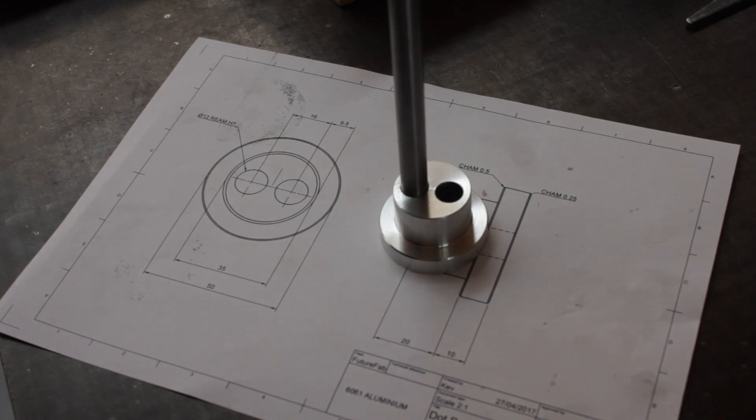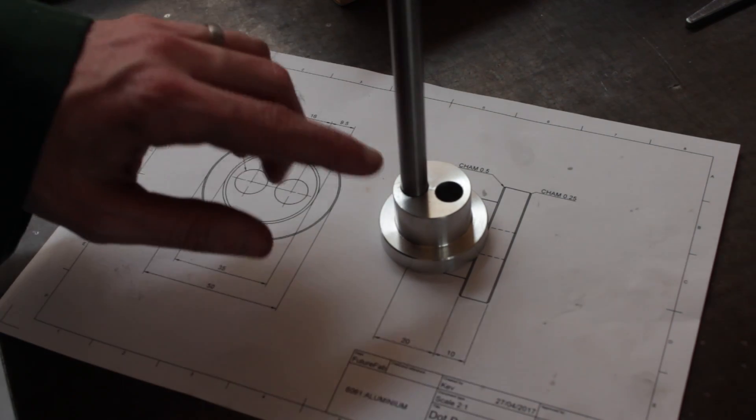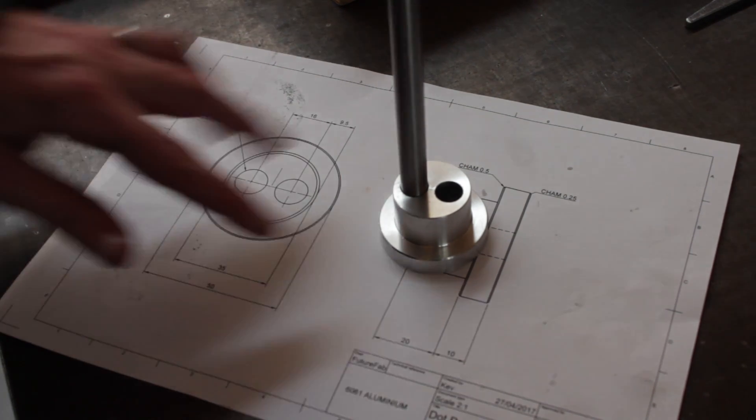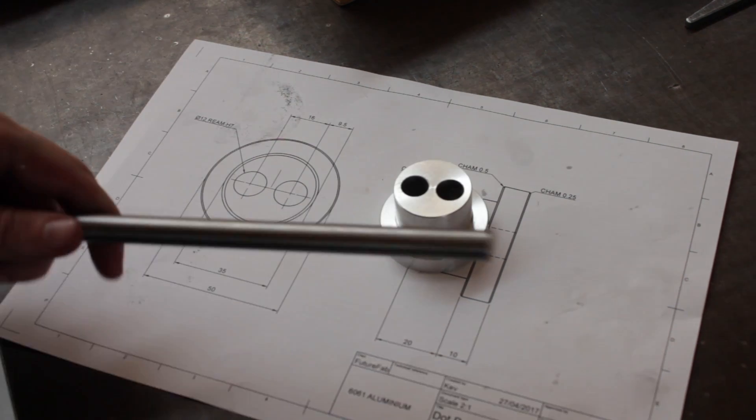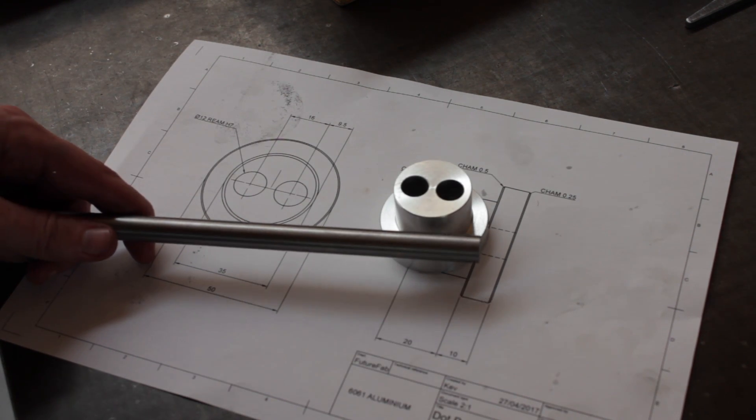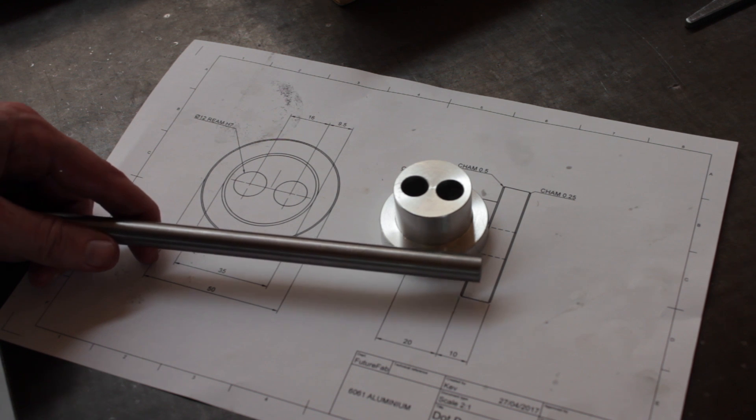So there we have it, our completed body. Next time we're going to be machining this piece of silver steel up, so we managed to maintain a really nice fit. We're just going to have to turn the 120 degree point on the end and then go through the hardening process.